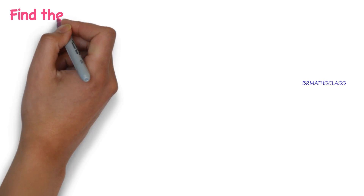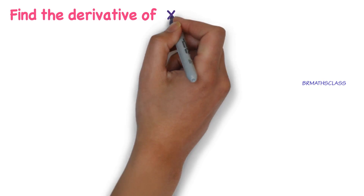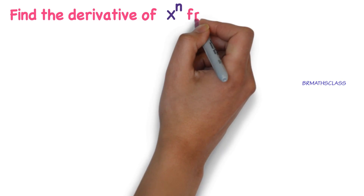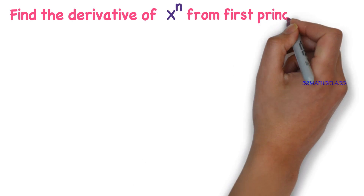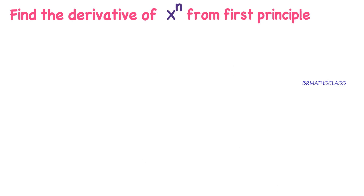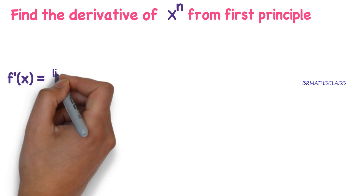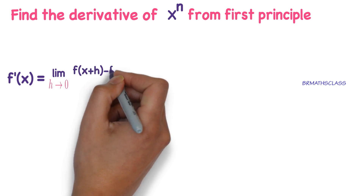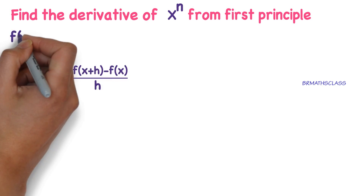Find the derivative of x power n from first principle. What is first principle? We know that f dash of x equals to limit h tends to 0, f of x plus h minus f of x divided by h. This is called first principle.